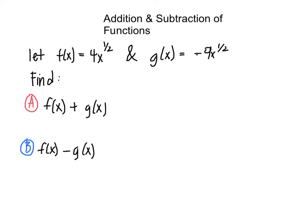Our first function is let f of x equal 4x to the 1 half and let g of x equal negative 9x to the 1 half. So we are told to find f of x plus g of x.